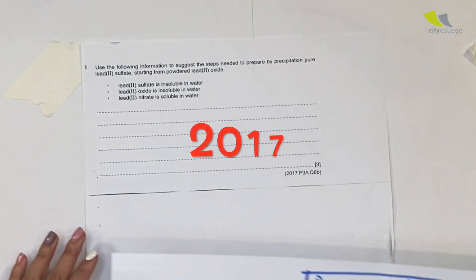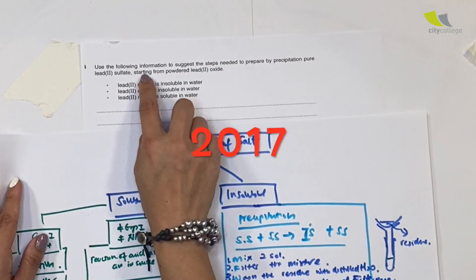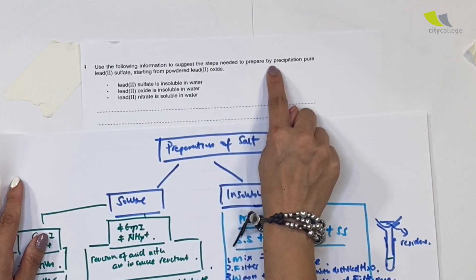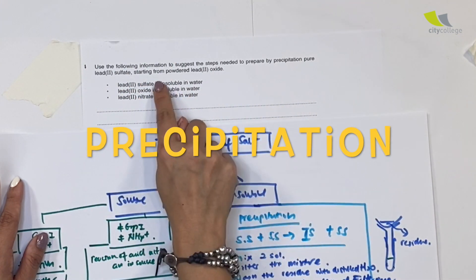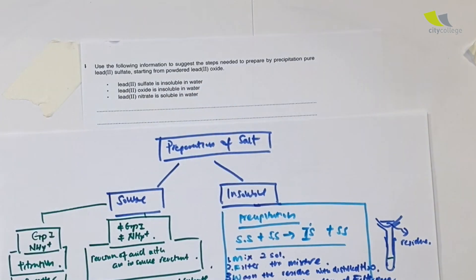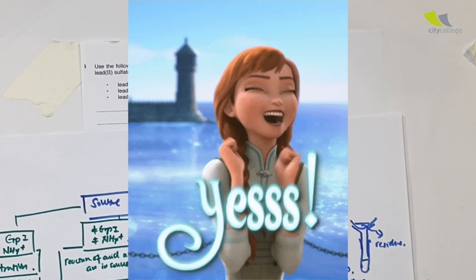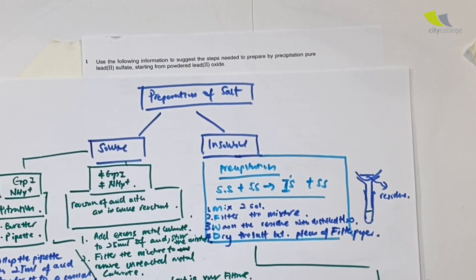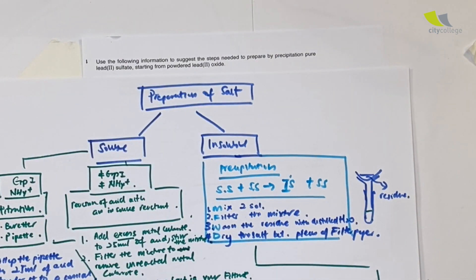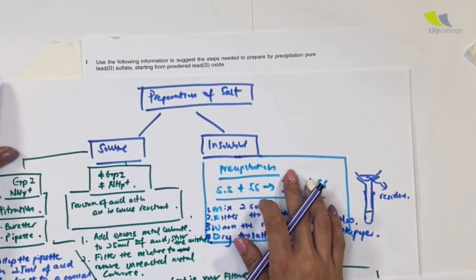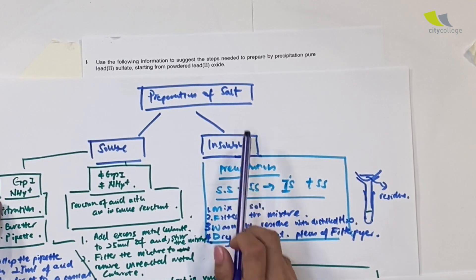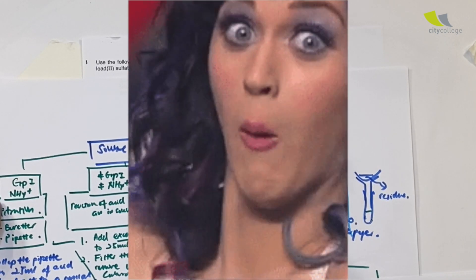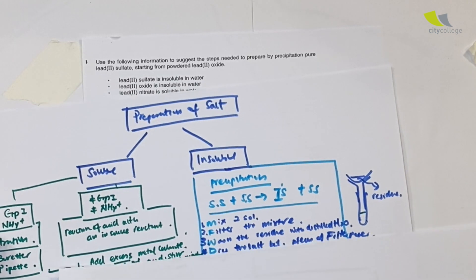The 2017 paper question says: use the following information to suggest the steps needed to prepare by precipitation pure lead sulfate, starting from powdered lead oxide. They are very kind — they always tell you whether it's soluble or insoluble, and what method to use. But this time, you start with lead oxide. For precipitation, you need a soluble solution. Lead oxide is not a soluble solution, so what do you need to do?